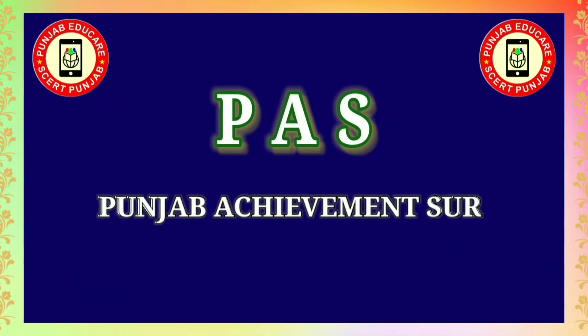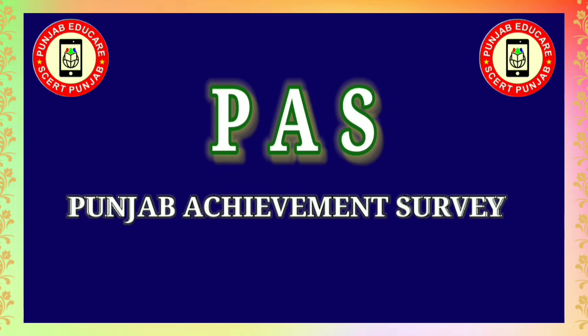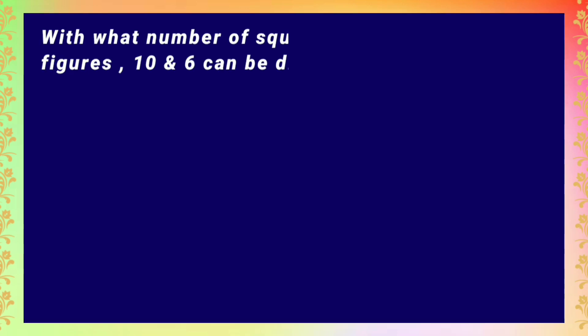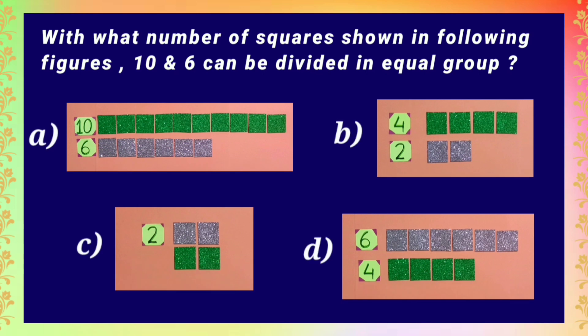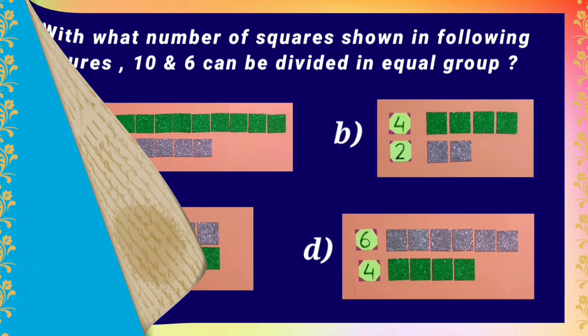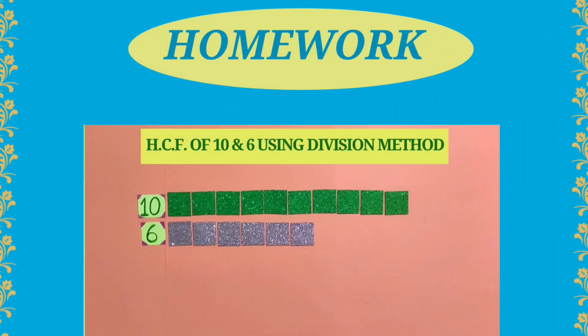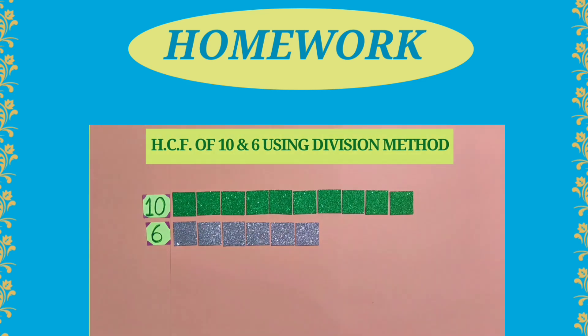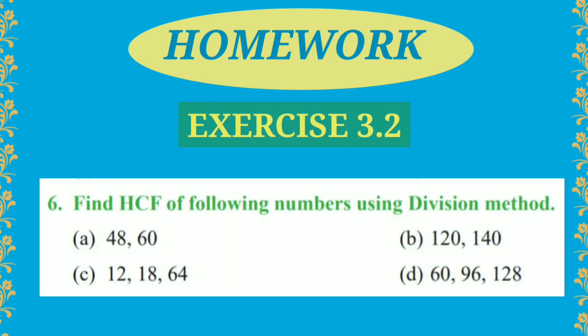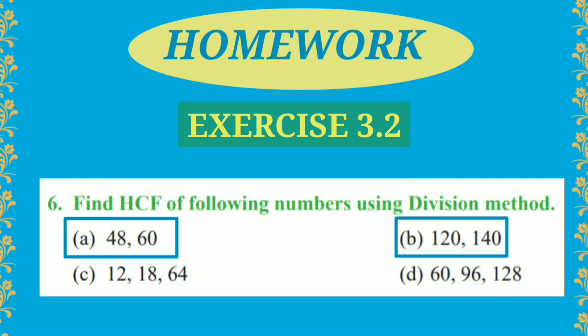Dear students, now let us prepare ourselves for practice. With what number of tiles shown in the following figures can 10 and 6 be divided in equal parts? We can divide 10 and 6 in equal parts of 2 squares. Therefore, option C is the right answer. For your homework, you will repeat this activity with 15 and 10 square shapes. And from exercise 3.2, you will attempt part A and B of question 6. Thank you so much.